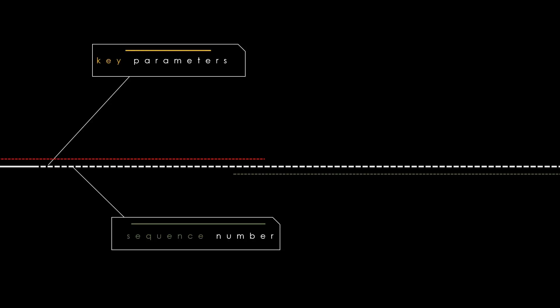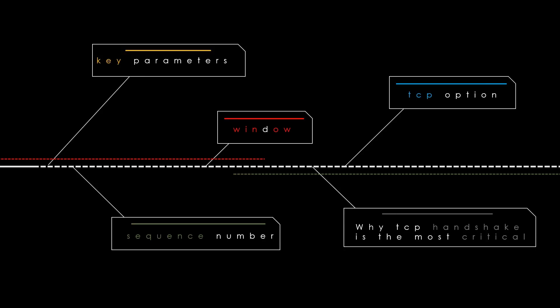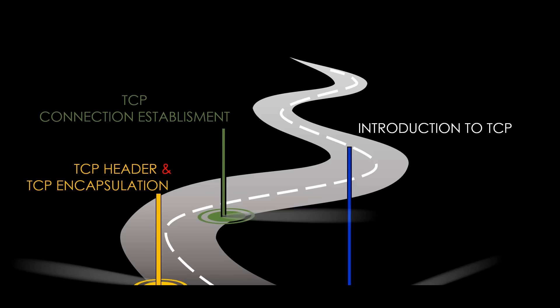We will learn about what key parameters are exchanged during the process, how sequence numbers work — which is key to understanding TCP — what flags are exchanged, how each end exchanges its receive window, and how much expected data payload per segment is expected during the flow. At the end of this video we'll understand why the TCP three-way handshake is the most critical part to understand. We'll be starting our journey from series three.